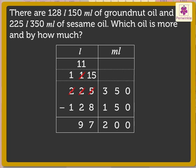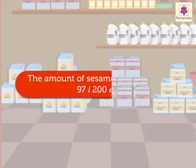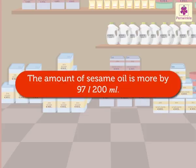Now, subtract the 100's. That is, 1 minus 1 is equal to 0. So, we get the answer as 97 litres. Thus, the amount of sesame oil is more by 97 litres 200 millilitres.